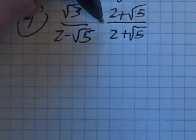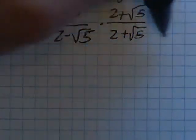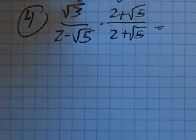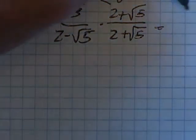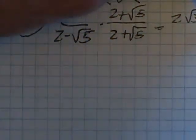And notice I'm just multiplying by one because one doesn't change the value of it. So in the numerator, that root three is just gonna get distributed. So two times root three is two root three. Root three times root five is root fifteen.